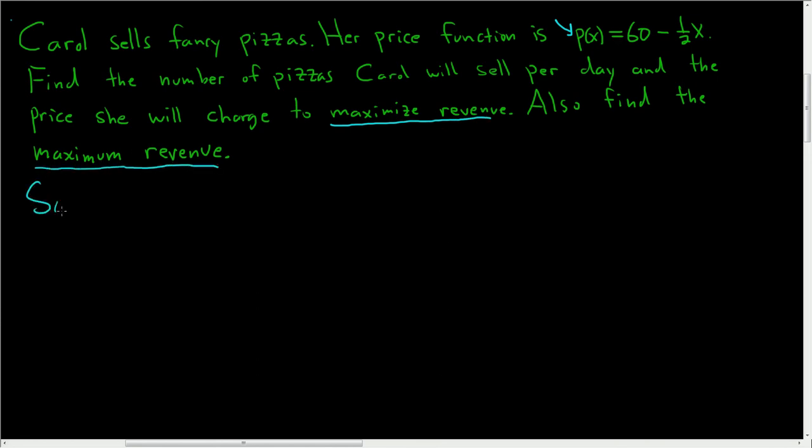Solution. The revenue function R(x) is equal to the quantity times the price. The price is given by p(x). So revenue is quantity, that's how many pizzas Carol has to sell, and p(x) is the price function for her fancy pizzas.